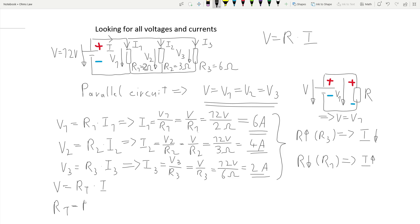RT equals R1 parallel to R2 parallel to R3. This equals 1 divided by 1 over R1 plus 1 over R2 plus 1 over R3. The total resistance equals 1 Ohm.